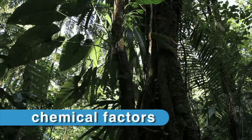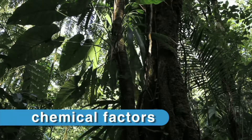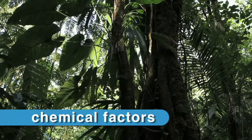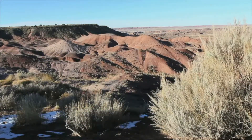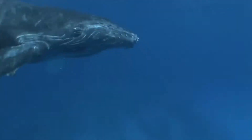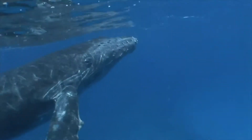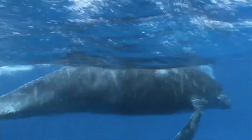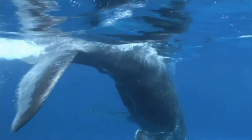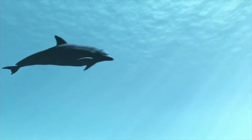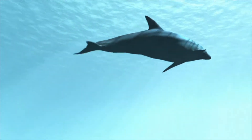Chemical factors that impact ecosystems include the level of water and air in the soil. In an aquatic or water-based ecosystem, the chemical factors include the amount of oxygen, salt, and carbon dioxide found in the water. Chemical factors greatly impact the type and variety of living organisms that live in an ecosystem.